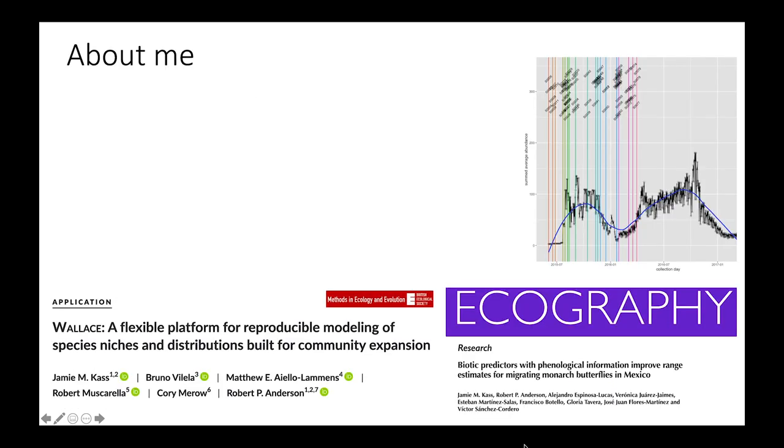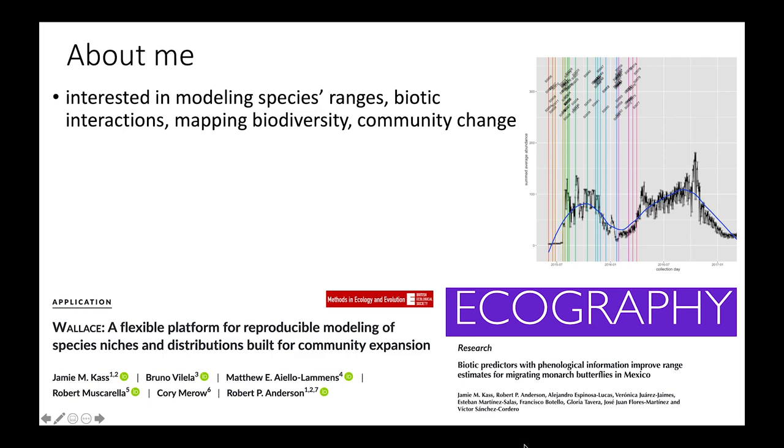So first, a bit about me. I graduated with my PhD from City University of New York under Professor Robert Anderson. My topic was the effects of biotic interactions on species ranges. I'm still interested in modeling those ranges and associated biotic interactions, but I'm also interested in mapping biodiversity and community change over time and space. I'm the author of a couple of R packages, Wallace and the new version of ENMeval, which is not quite out yet. The reference for Wallace is below on the bottom left. There'll be a section in this course about that, which I will co-teach. And on the bottom right is a paper I published recently with collaborators where we modeled the migration range of the monarch butterfly in Mexico using biotic predictors.